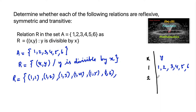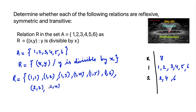For x = 2: 2 is divisible by 2, 4 is also divisible by 2, and 6 is also divisible by 2. So the possible ordered pairs are (2,2), (2,4), and (2,6).